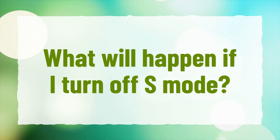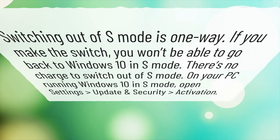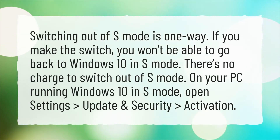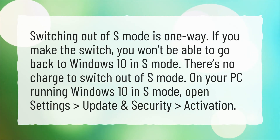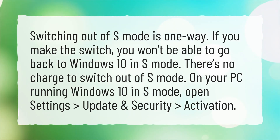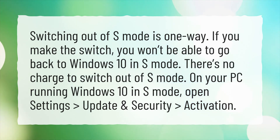What will happen if I turn off S mode? Switching out of S mode is a one-way process. If you make the switch, you won't be able to go back to Windows 10 in S mode. There's no charge to switch out of S mode. On your PC running Windows 10 in S mode, open Settings, Update and Security, Activation.